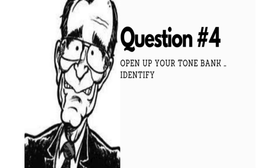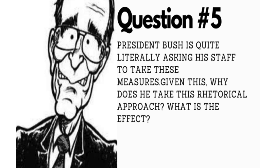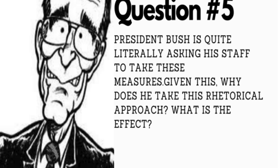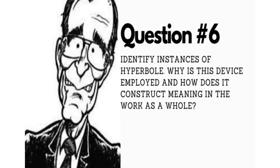Number four: open up your tone bank and identify the tones at play. I have an exhaustive list of tier-two level words to help kids accurately ascertain tone — they open their Google Classroom, pull up the tone bank, and either use words from the list or create synonyms. Identifying tone can be tricky. Number five: President Bush is quite literally asking his staff to take these measures — why does he take this rhetorical approach and what is the effect? You can get into ethos, pathos, logos, tone, diction, and syntax. Question six: identify instances of hyperbole, why is this device employed, and how does it construct meaning in the work as a whole?